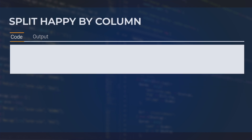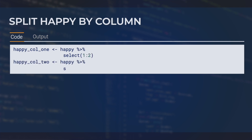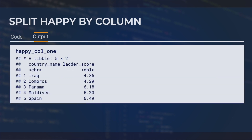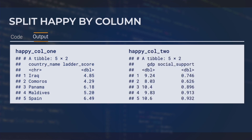Let's now take a look at bindCols. This time, let's again split the happy data frame into two smaller data frames, but by column. For this, we will use the select function. We produce one data frame called happyCols1 that contains the first two columns of the happy data frame, and another data frame called happyCols2 that contains the second two columns from the happy data frame.